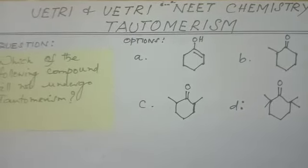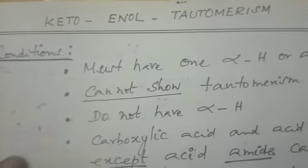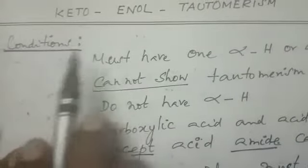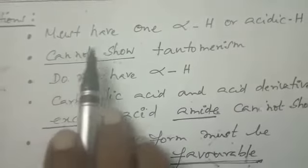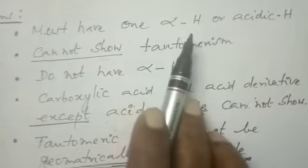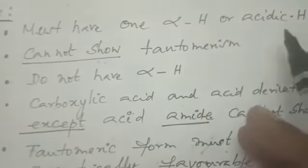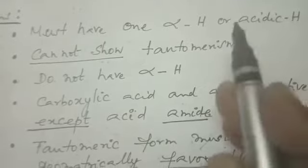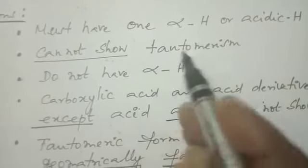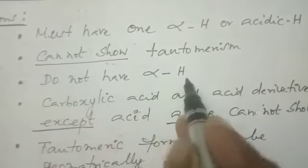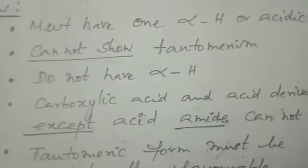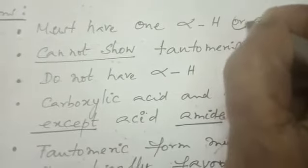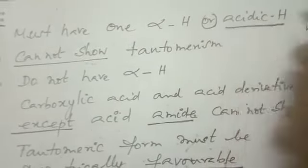Let us go to the topic: Tautomerism. Point number 1 — Keto-enol Tautomerism, that is the functional group interconversion between keto group and enol (alcohol) group. The condition is the compound must have at least one alpha hydrogen, or it may have acetyl hydrogen, to show Tautomerism. Compounds not having alpha hydrogen cannot show Tautomerism.